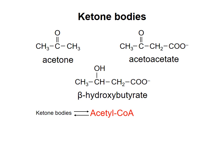These three compounds can cross the blood-brain barrier, and the brain will convert them back into acetyl-CoA for use in the citric acid cycle. Therefore, production of ketone bodies by the liver allows the brain to obtain energy from stored fatty acids.